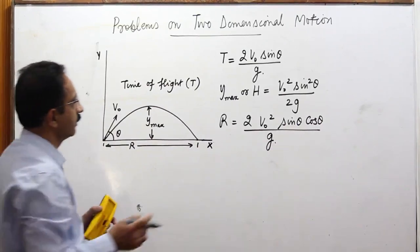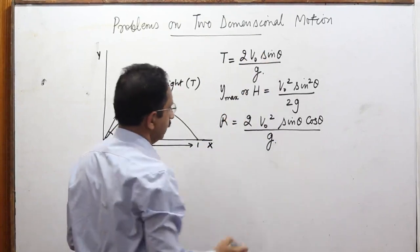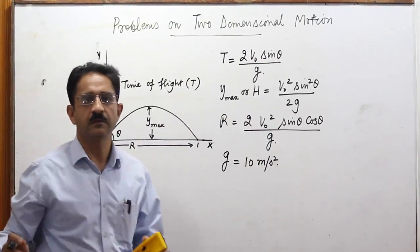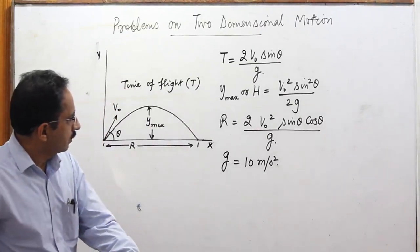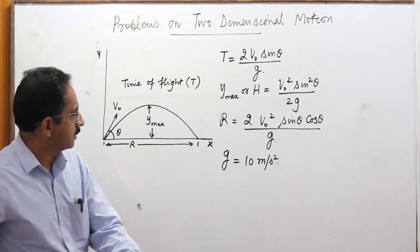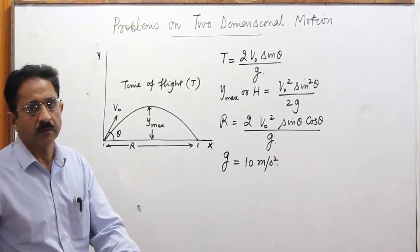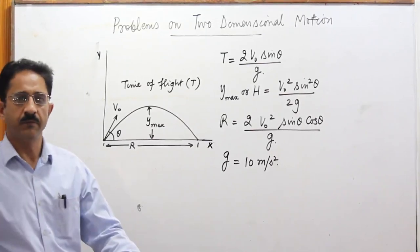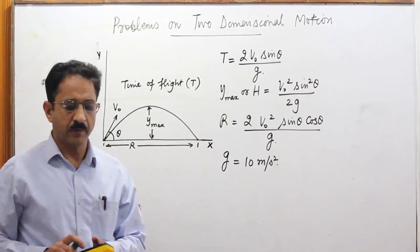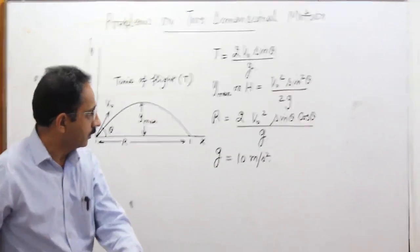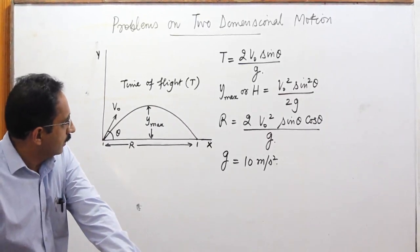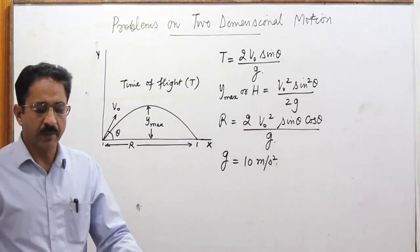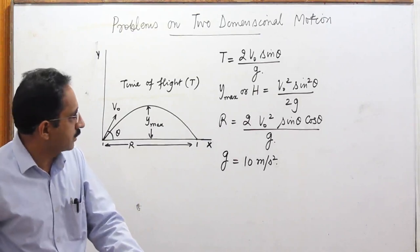In problems, we are sometimes given values of theta, V0, and G. For convenient calculation, G may be taken as 10 m/s², though 9.8 can also be used. Normally, theta, G, and V0 are given, and we are asked to determine time of flight, Y maximum, and range. Sometimes Y maximum or range are given and we have to find V0 and theta. Let's solve the first problem of this type.